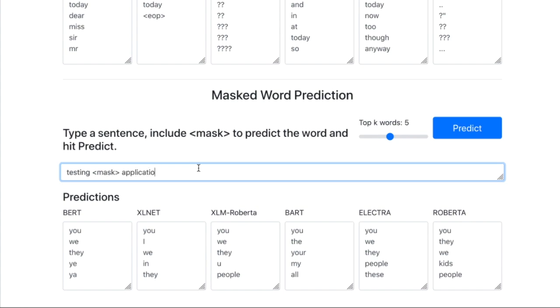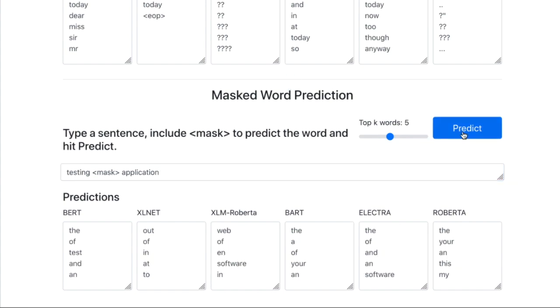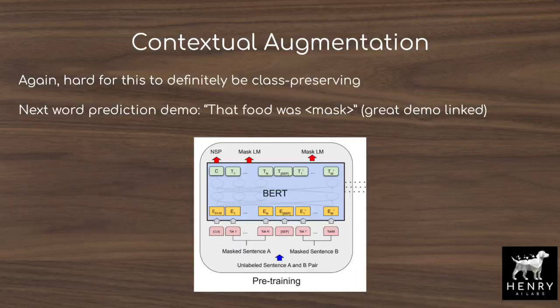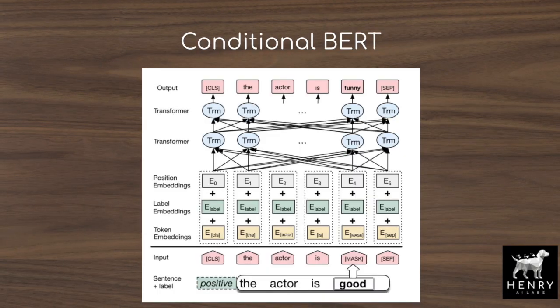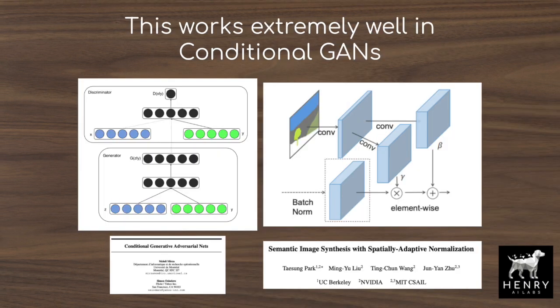This paper from researchers at Alexa AI shows that we can get more out of these pre-trained generative models than just as a stepping stone for representation learning. The authors use the generative pre-trained models to augment labeled datasets, conditioning the models on the class label so that the generated data doesn't corrupt the original label.